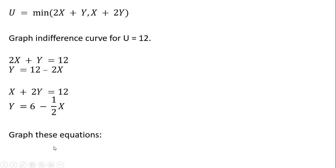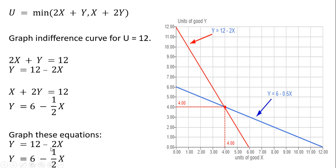The next step in graphing this indifference curve is to graph both of these equations over here on the right. So y equals 12 minus 2x is represented by the red line, with a vertical intercept of 12 and a slope of minus 2. Then graphing the bottom equation, y equals 6 minus one-half x, that has a vertical intercept of 6 and a horizontal intercept of 12.